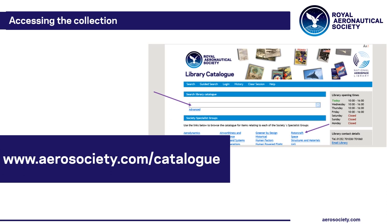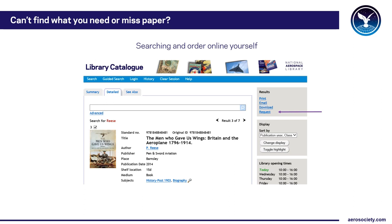If you can't find what you're after on the e-library, or just like the feel of paper in your hands, try our traditional library. The best way to access this is via our library catalogue — we have a simple Google-style search box but I rather like the guided search, which gives you information on the most recent books and articles on many subjects. When you find what you need, select 'request' and we can arrange for the item to be put to one side for you. Members in the UK can also borrow books via our postal loan service.